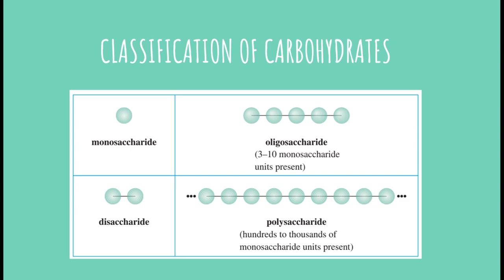Lastly, polysaccharides are long, often highly branched chains of monosaccharides. Common examples include glycogen, starch, and cellulose.